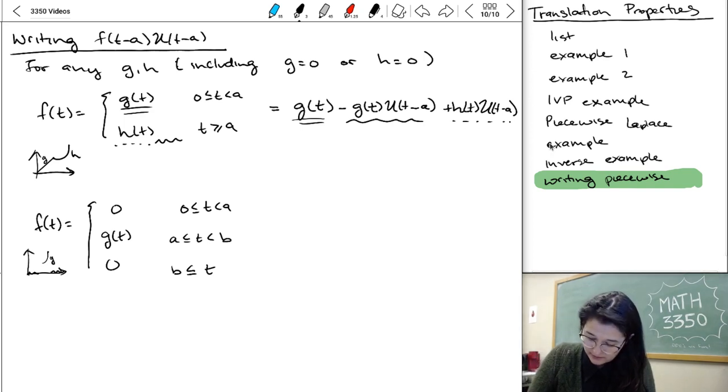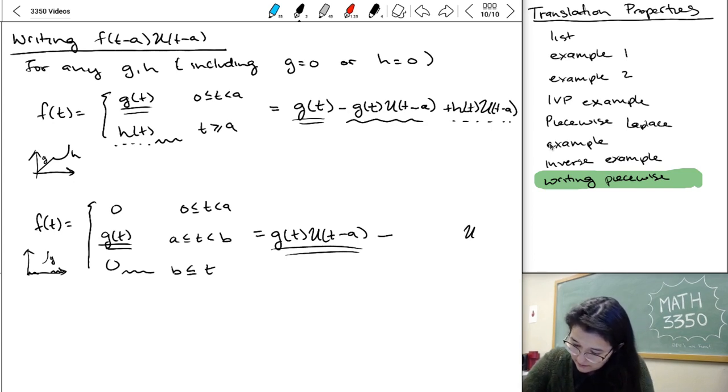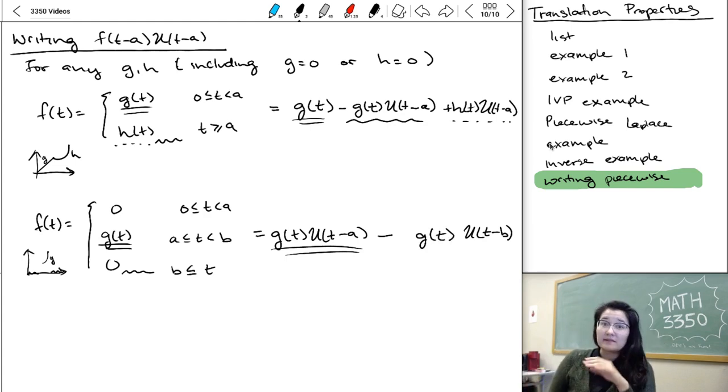And then the second example that I want to do. The function starts at zero, so there's nothing we need to do to start. And then, it's gonna become G of T eventually, and it's gonna do that when we cross A. So this term says, start G of T only after A. And then this would be zero, then G of T forever if we didn't do anything else. So we need to remember that afterwards, for T that have crossed B, we need to take away that G again. And that's how we would represent this piecewise function.